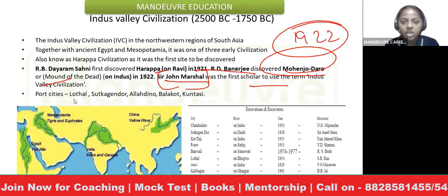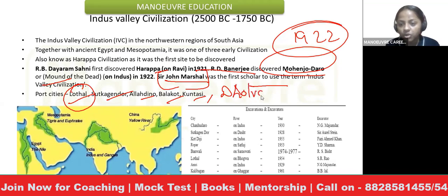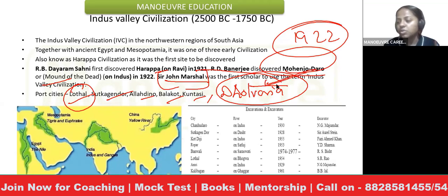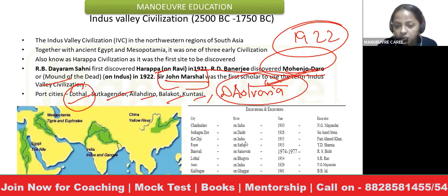Other important cities from an exam perspective are Lothal, Sutkagendor, Alandhoo, Balakot, and Kot Diji. The most important city is Lothal. One city that has been recently in the news and is important for exams is Dholavira. Can anyone tell me why Dholavira was in the news? This is important from both current affairs and static GK perspectives.